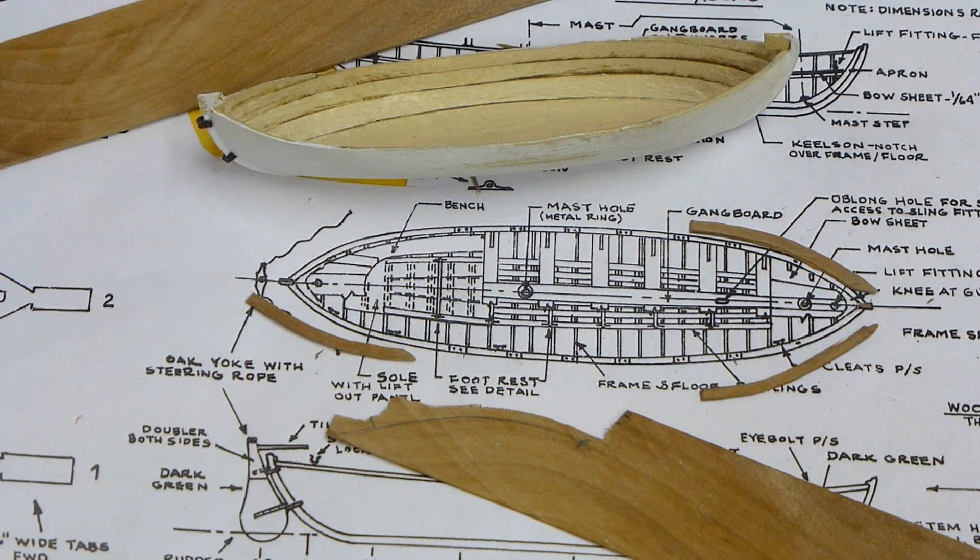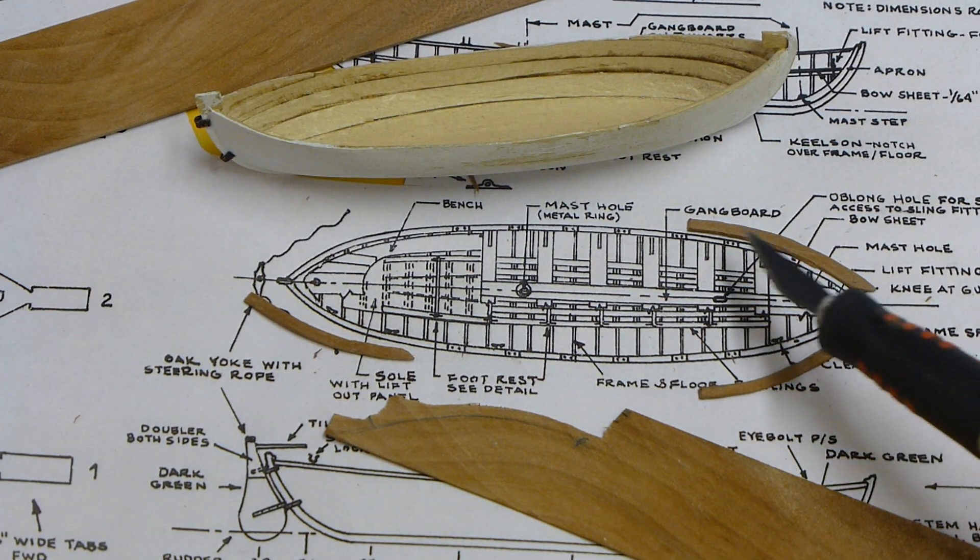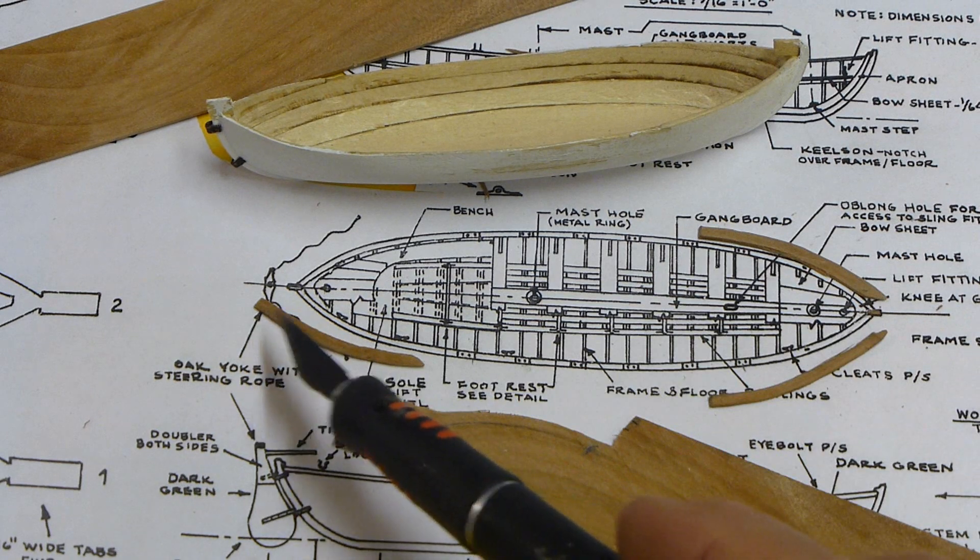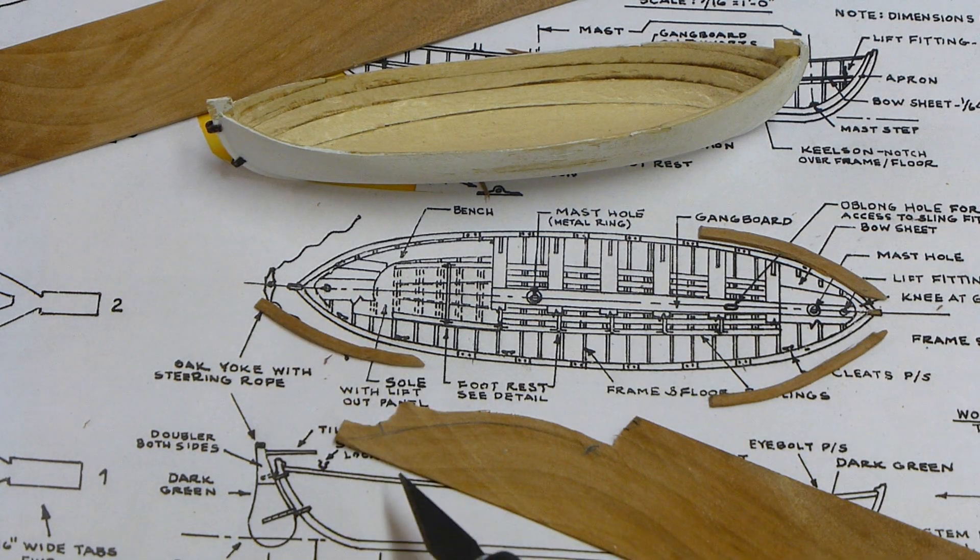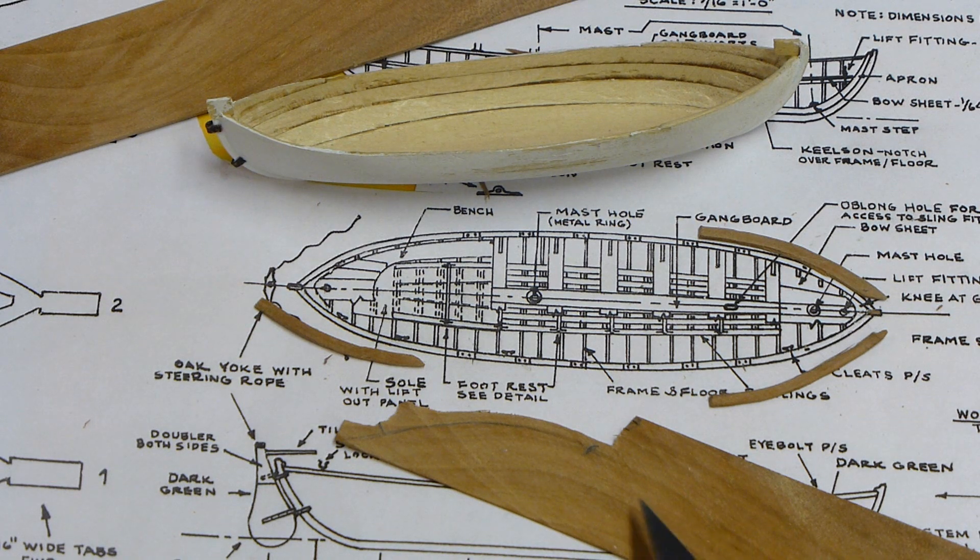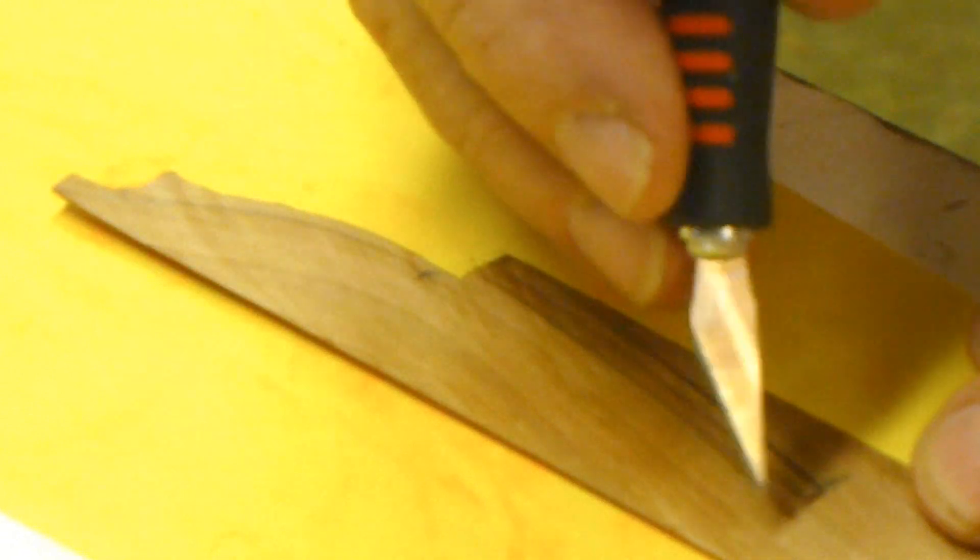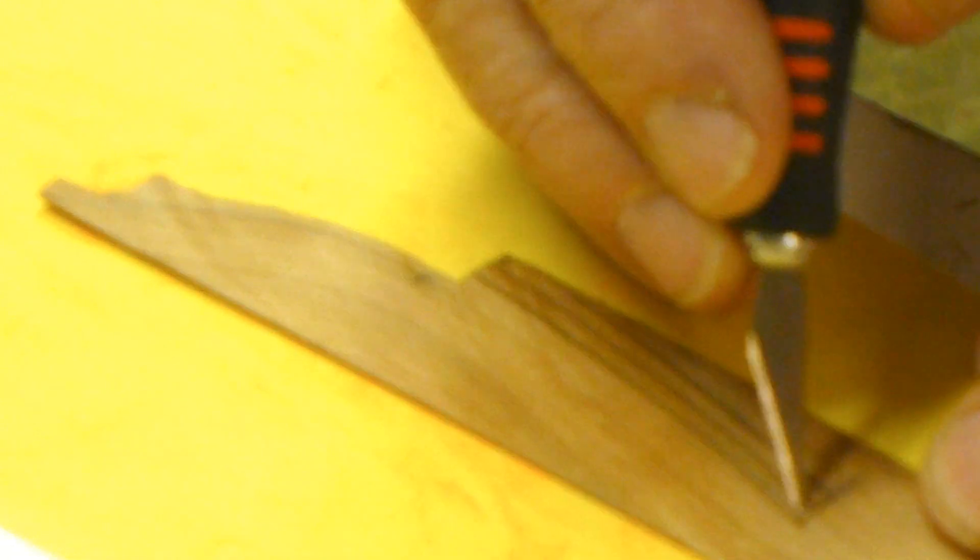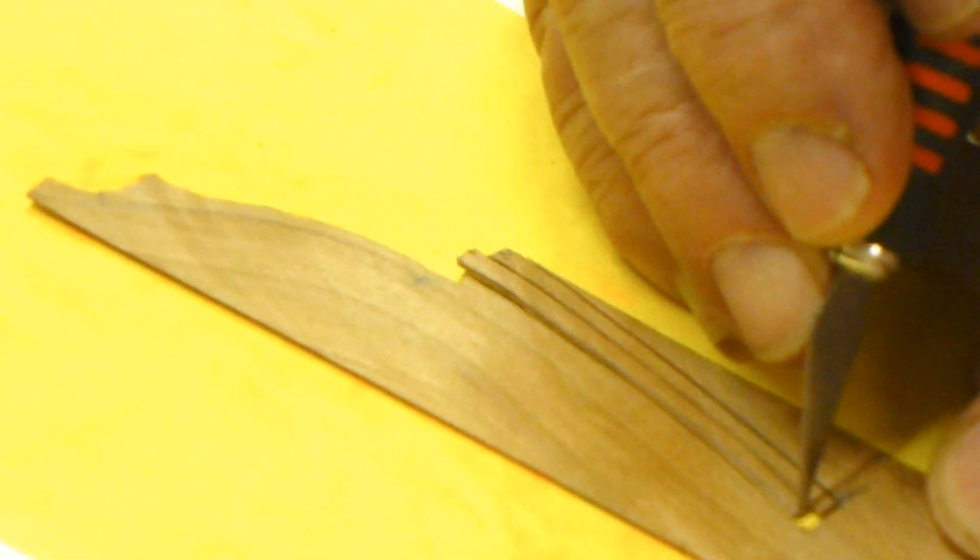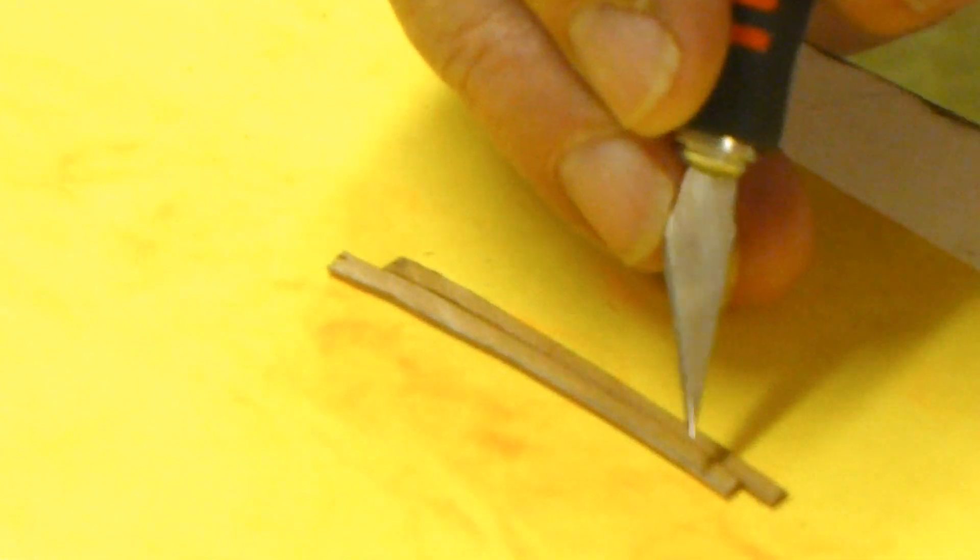I found some cherry that had a nice curvature to the grain, and that is what I will be using for the top because it was easy to follow the grain and not have it split too easily. The long side pieces were also made—you can see the grain right there runs very nicely with a slight curvature that I needed. This worked out very well.